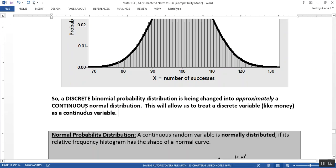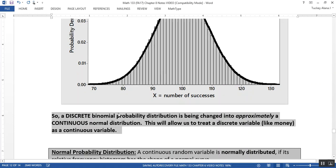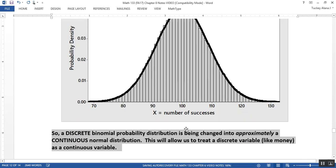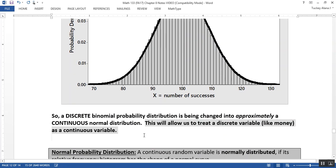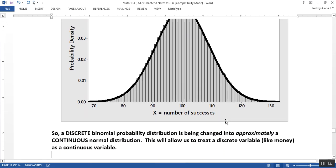As n increases, your binomial distribution gets closer and closer to that normal distribution. So that discrete distribution is being changed into an approximately continuous normal distribution. This is one of the ways we can make that leap from discrete variables to continuous variables. For things like money with lots of decimal places, it's often easier to treat it like a continuous variable.